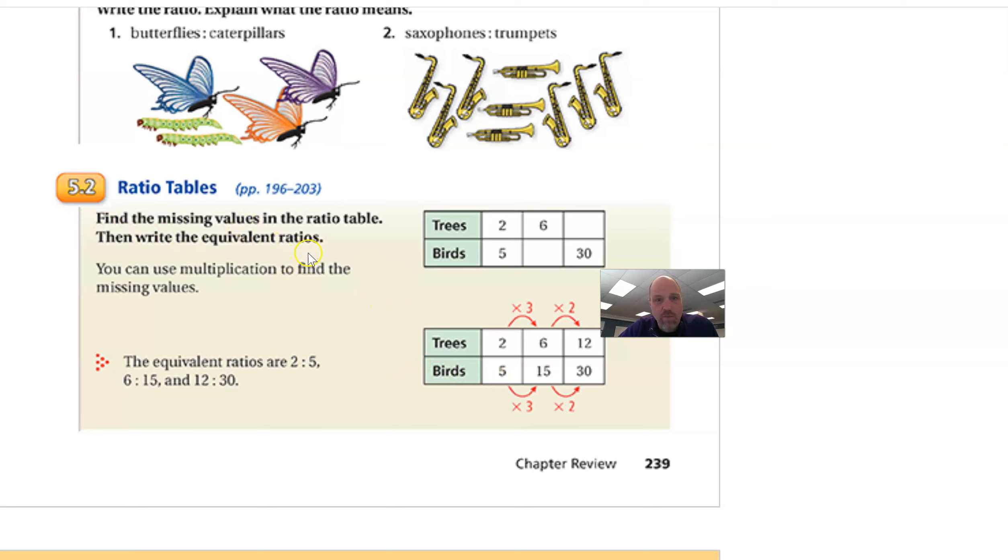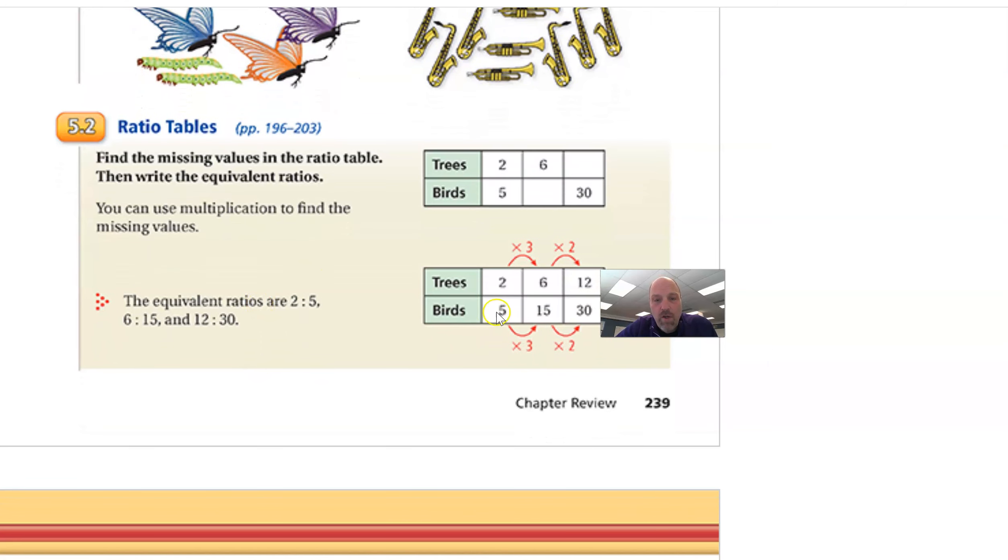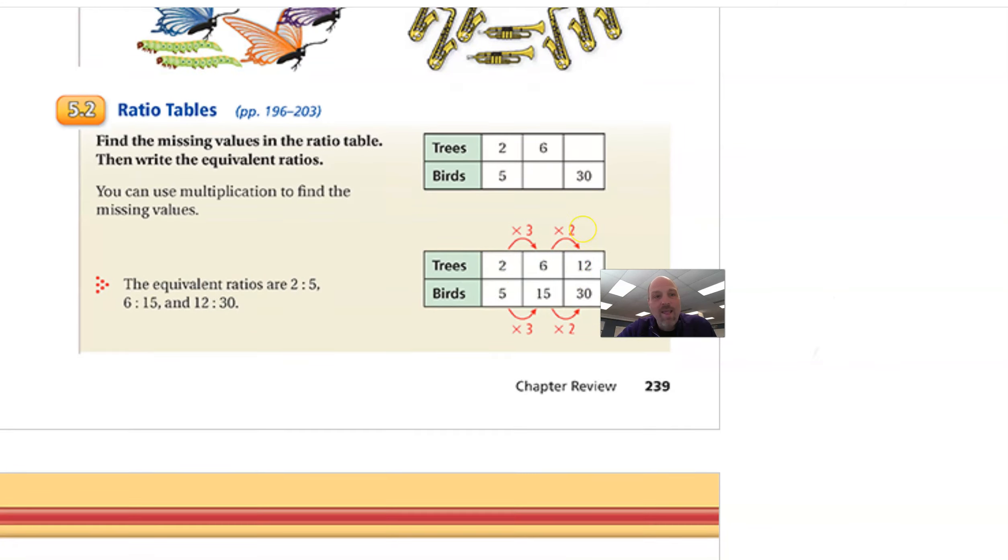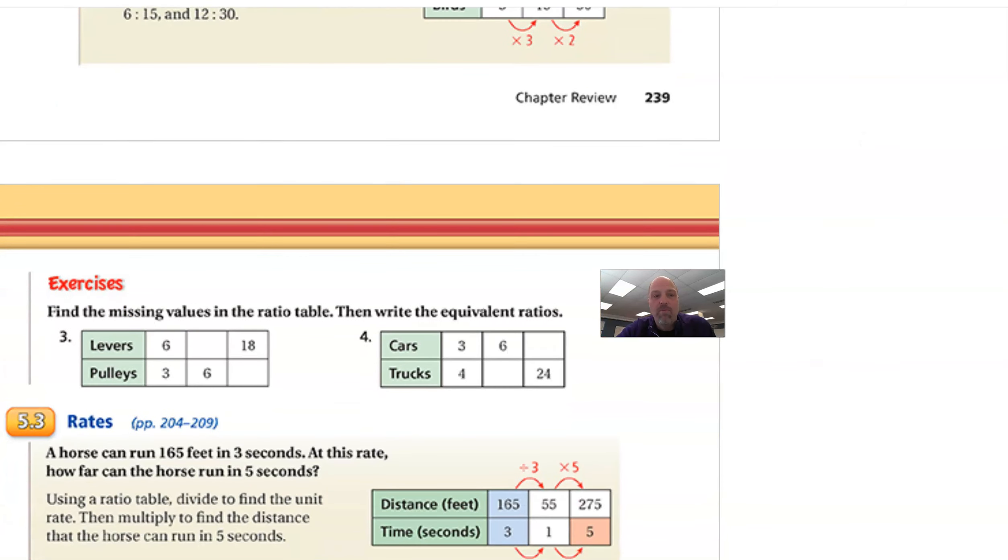This is lesson 5.2. We did ratio tables. You've been doing ratio tables since second and third grade, one form or another, and really heavily in fourth and fifth grade. So we're pretty good with ratio tables. Whatever you do to one, you do to the other. So we just multiply there to fill in the spaces. I think most people have been pretty good with that before sixth grade.